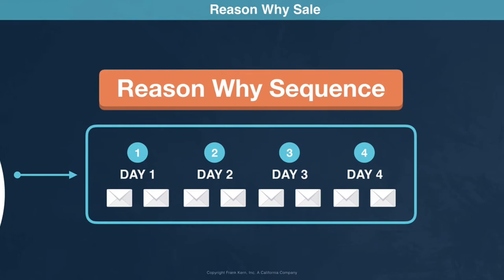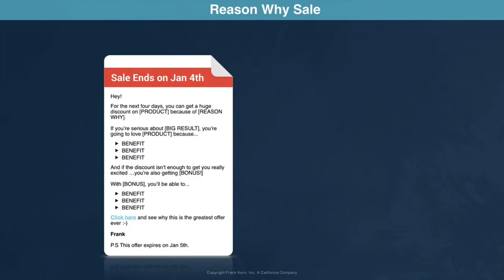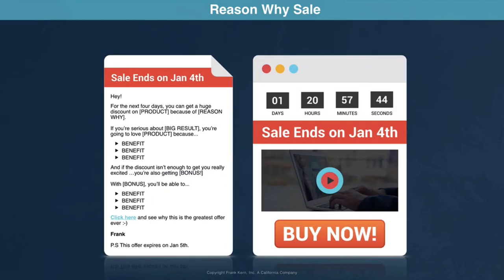The basis of the campaign is giving your list a reason why you're having a special offer, and that offer expires in four days. The email sequence sends an email every day for four days telling them about the special offer that's ending. Each email has a timer, and when someone clicks a link from the email to go to your sales page — which is included in the campaign — the timer on the sales page matches the timer in the email. If they try to access the page after the timer hits zero, they'll see an expired page.